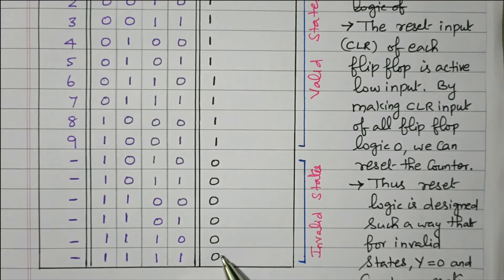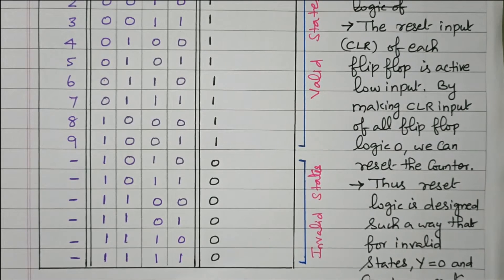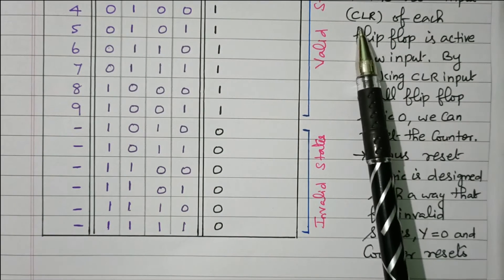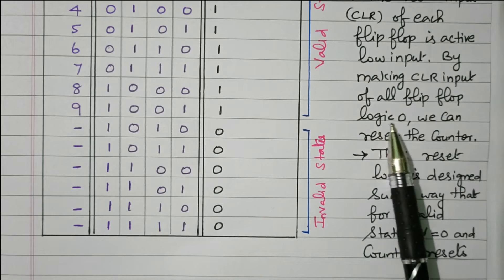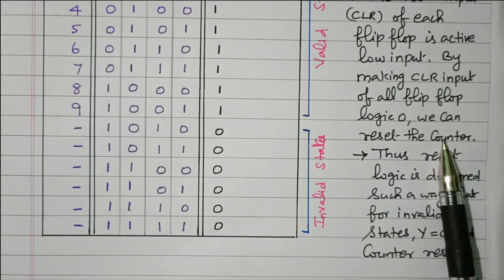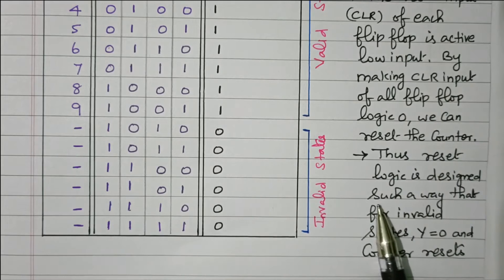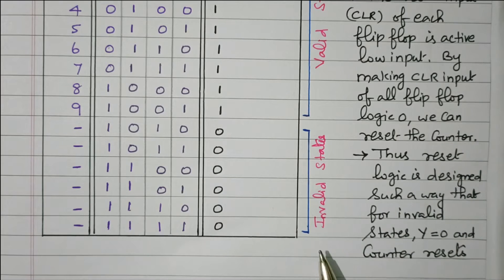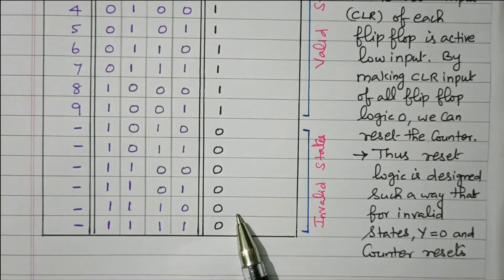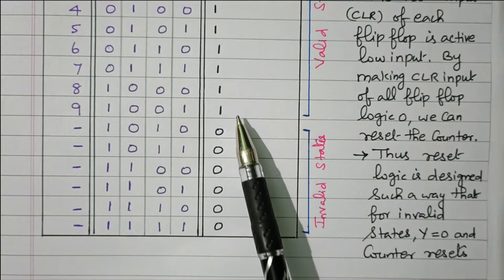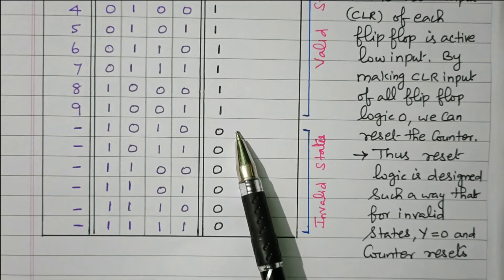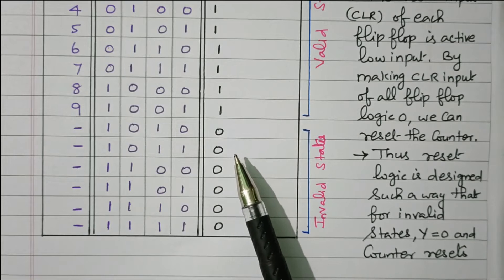Now we need to find the logical expression for the reset logic Y, so that it can be implemented with a logic diagram. The reset input — clear — of each flip-flop is an active-low input. By making the clear input of all flip-flops logic low, we can reset the counter. Thus the reset logic is designed such that for invalid states, Y equals 0, so that the counter will reset. If Y equals 0, it will reset; so after 9 it resets to 0, goes 0, 1, 2 up to 9 again.